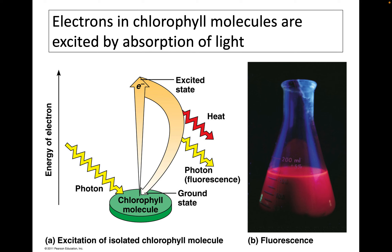Electrons in the chlorophyll molecule are excited by the absorption of light. A photon — a particle of light — strikes a chlorophyll molecule in the chloroplast, like a trampoline, exciting that electron and shooting it up to an excited energy state. As that electron falls back down to its ground state, it releases heat energy and a photon — that's fluorescence, which is when chemicals glow.